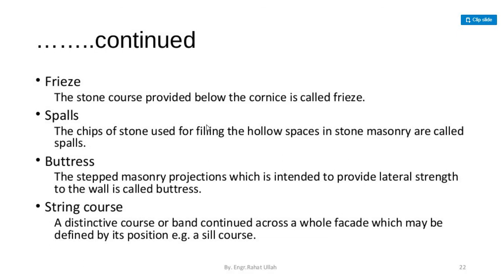Frieze — the stone course provided below the cornice is known as frieze. Spalls — the chips of stone used for filling hollow spaces in stone masonry are called spalls. Buttress — the stepped masonry projection intended to provide lateral strength to the wall is known as a buttress. String course — a distinctive course or band continued across a whole facade, which may be defined by its position, for example a sill course.